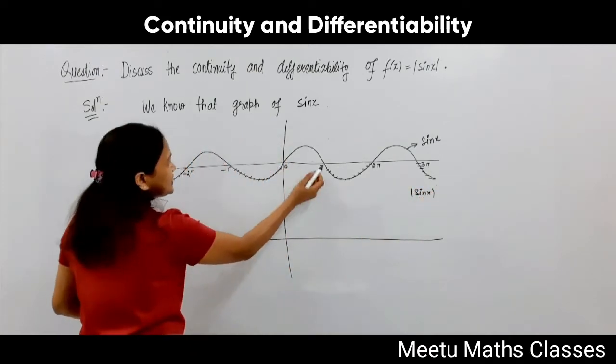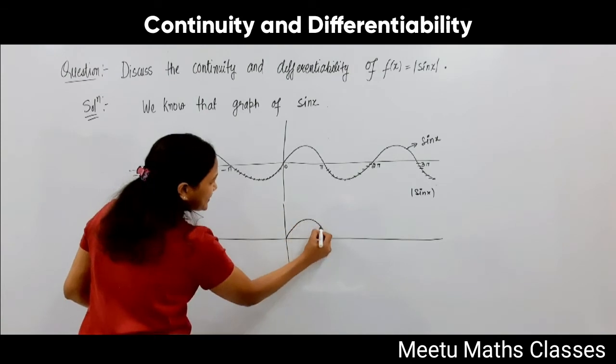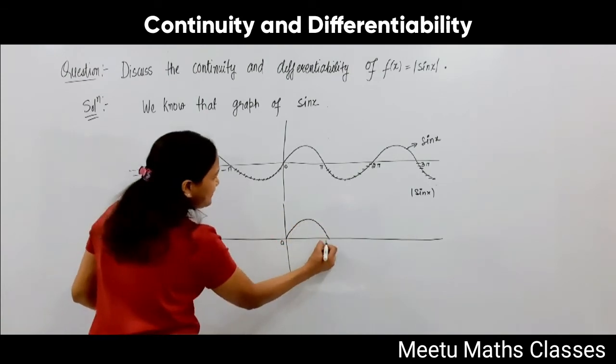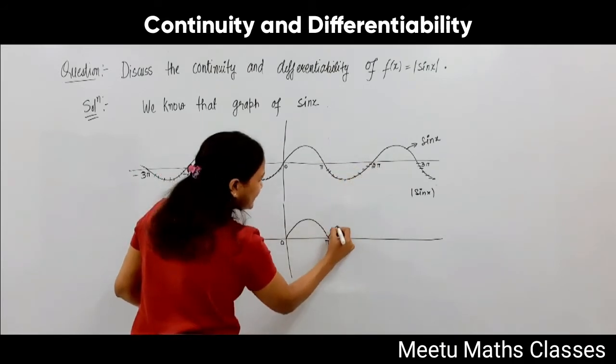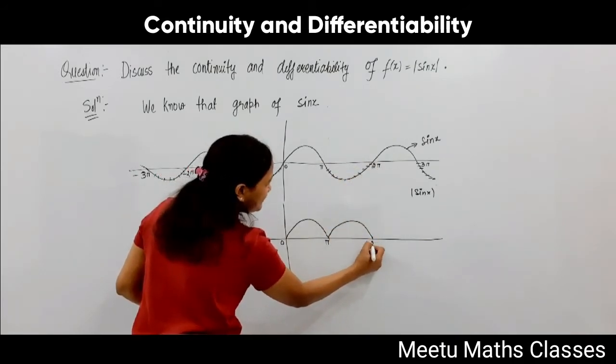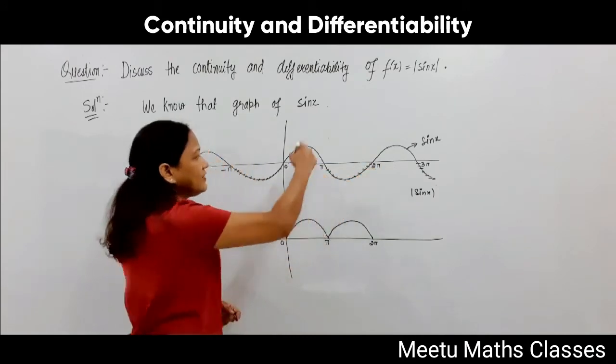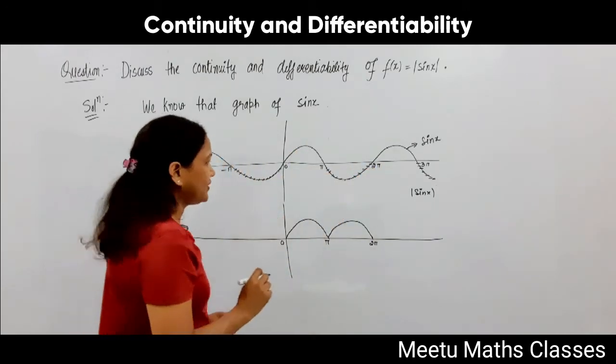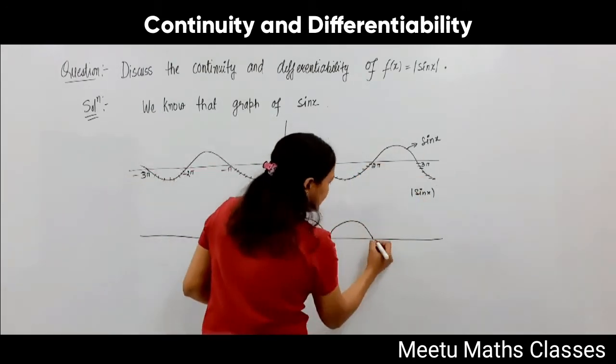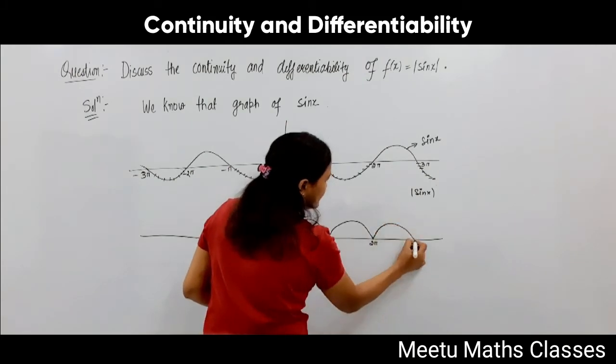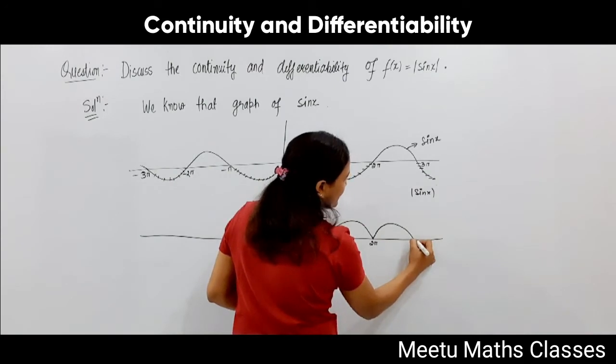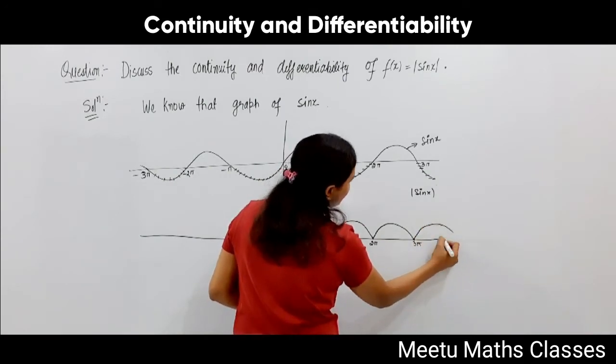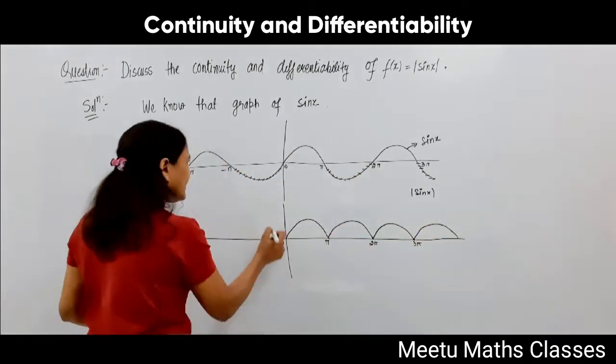If you draw the graph of modulus sine x: from 0 to π your graph is positive, so keep it as is. But from π to 2π your graph is negative, so it will make this graph in the positive direction. Again between 2π to 3π your graph is positive. Similarly, the 3π to 4π graph will also be converted to positive.